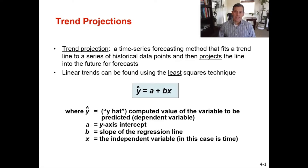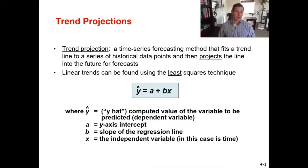The formula for the least squares technique is: y-hat equals a plus bx. Here y-hat is the computed predicted or dependent variable. The a is your y-axis intercept, b is the slope of the regression line, and x is the independent variable — for the least squares technique, that independent variable is going to be time. For regression analysis covered next, the independent variable can be something other than time.